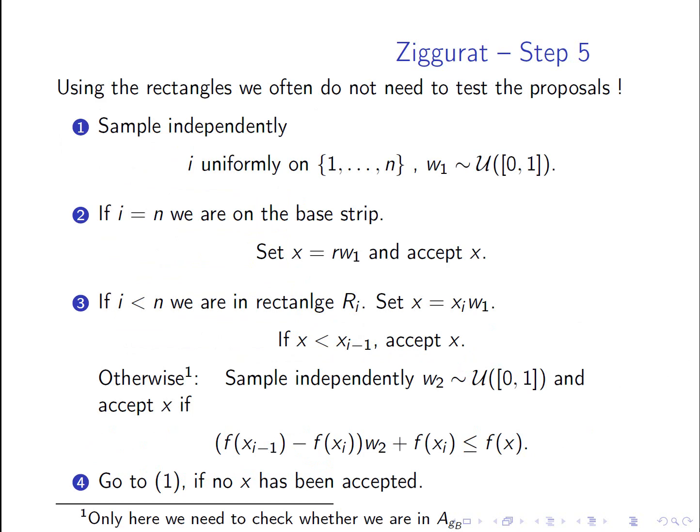Let's break this down into some more steps. So as I said, using the rectangles, we often do not need to test the proposals. So first, what we do is we sample independently of the rectangle we are in. Which means we sample I uniformly on 1 to n. And what we also need is the X coordinate. And for this we need a realization of a uniformly on 0, 1 distributed random variable and we call this W1.